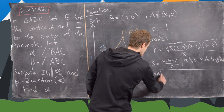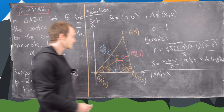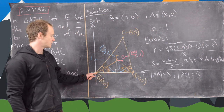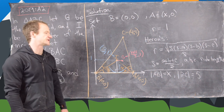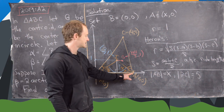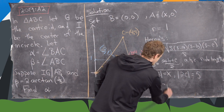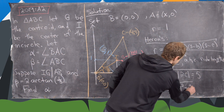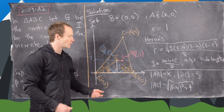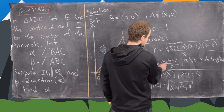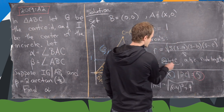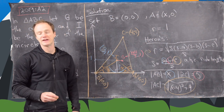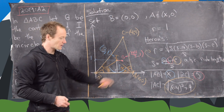Now let's calculate the side lengths. AB = x. BC = 5 because √(4² + 3²) = √25 = 5. The side length AC is a bit trickier but using the distance formula we get √((x−4)² + 9). We'll plug these into the inradius formula — calling AB as one side, BC as another, and AC as the third — to get an equation for x.